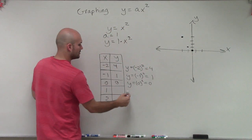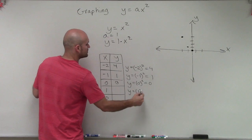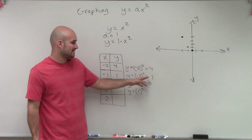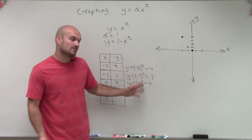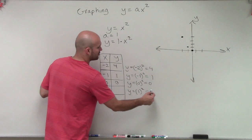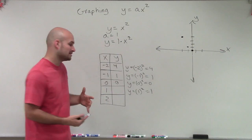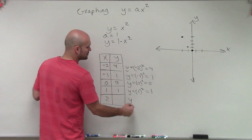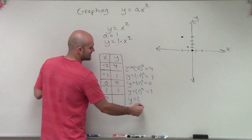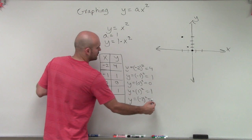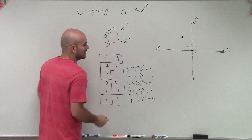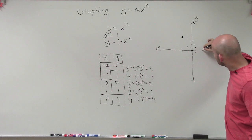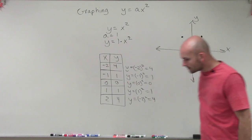For x equals 1: y equals 1 squared. Notice the very important pattern here — negative 1 squared gives me 1, and 1 squared also gives me 1. This symmetry pattern is very important. So 1 squared is just 1. Then 2 squared is going to be the same as negative 2 squared, which equals 4. So I plot over 1, up 1, and over 2, up 4.